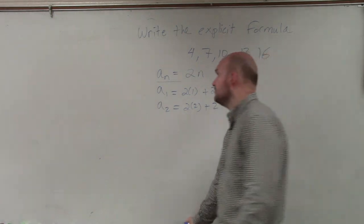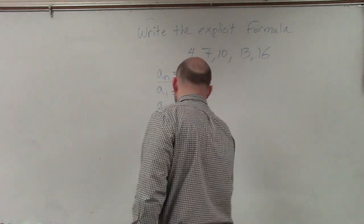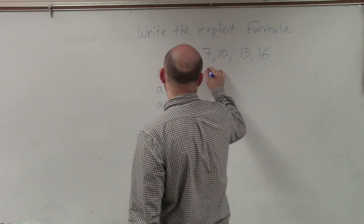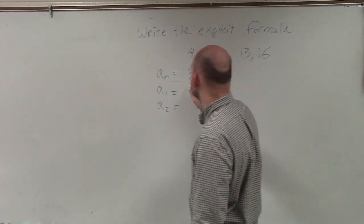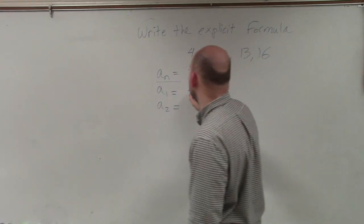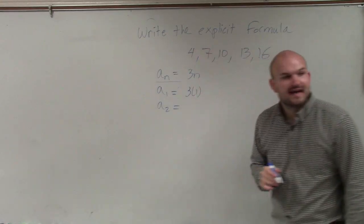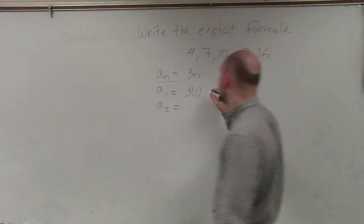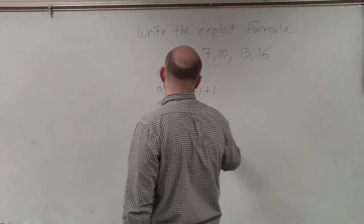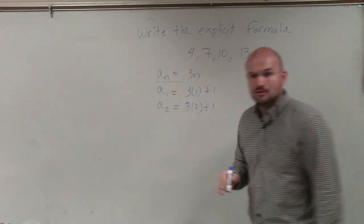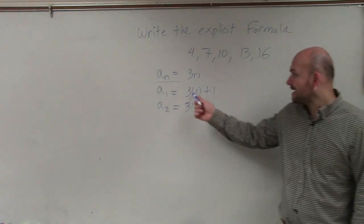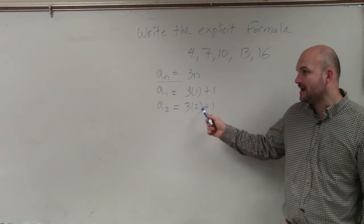Now let's work on 3n. If I did 3 times 1, what would I have to add to it to get to 4? 1. What if I did n=2? Oh, so it looks like I have the same formula. It just depends on what number I have, right?